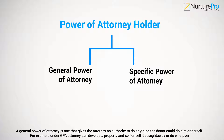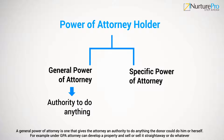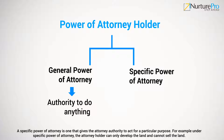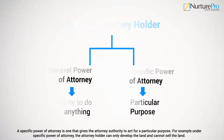A general power of attorney is one that gives the attorney an authority to do anything the donor could do him or herself. For example, under a GPA, the attorney can develop a property and sell it, or sell it straight away — essentially do whatever. A specific power of attorney is one that gives the attorney authority to act for a particular purpose. For example, under a specific power of attorney, the attorney holder can only develop the land and cannot sell the land.